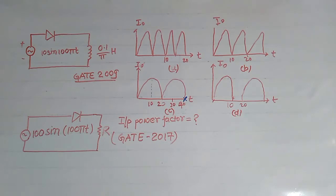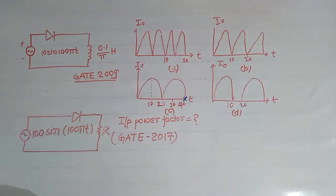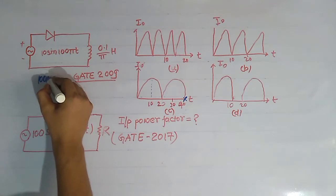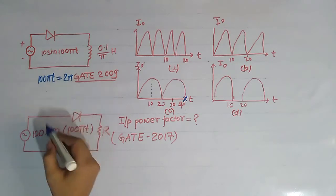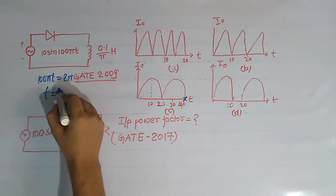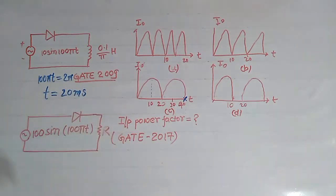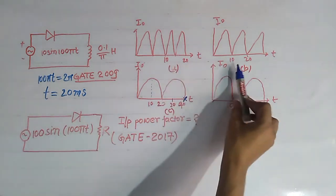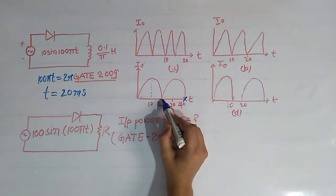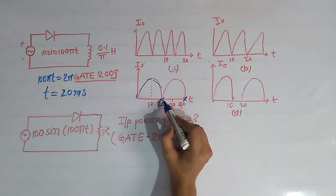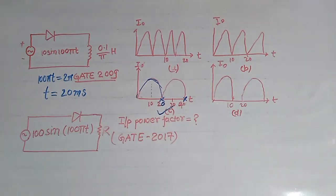Now we will solve the question that has been asked in GATE 2009. In this question, a circuit is given and we have to find the waveform of output current I0. Here the diode is connected in series with an inductor, so it is a diode rectifier with L load. For a diode rectifier with L load, we get current up to 2π. That is, 100πt equals 2π, meaning 2π occurs at t equals 20ms. So option C is correct.